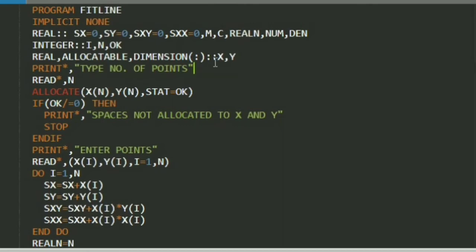उसके बाद मैंने declare किये arrays, real type x and y, और allocatable का use करके हम run time पे इसे space provide करा सकते हैं. उसके बाद print star का use करके statement print कराए गई है, और read star का use करके n की value provide कराए गई है.